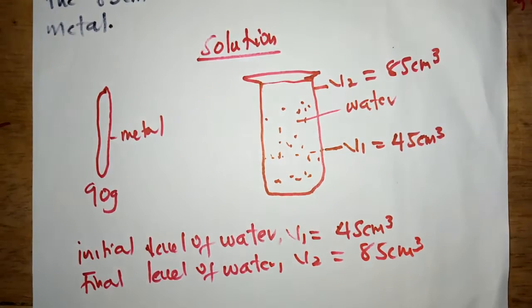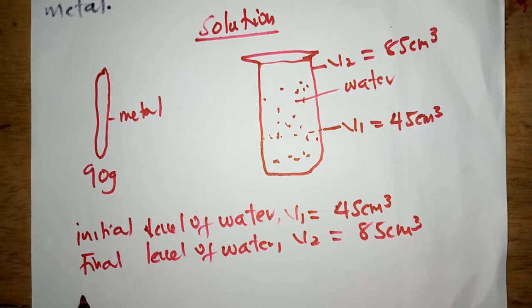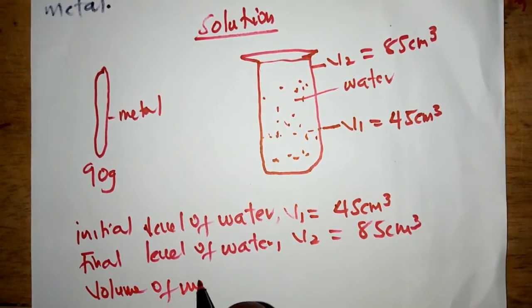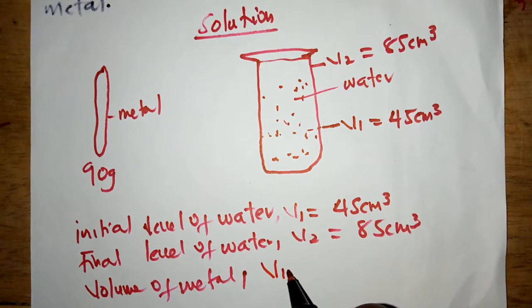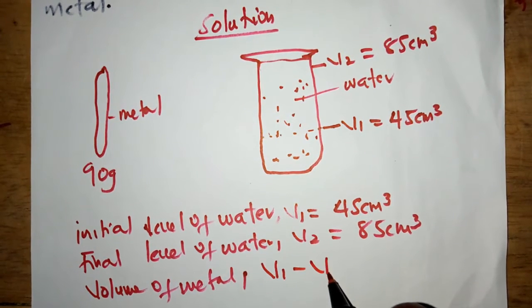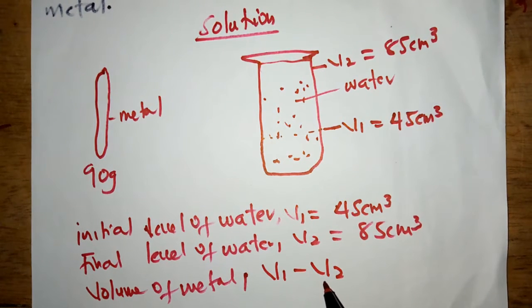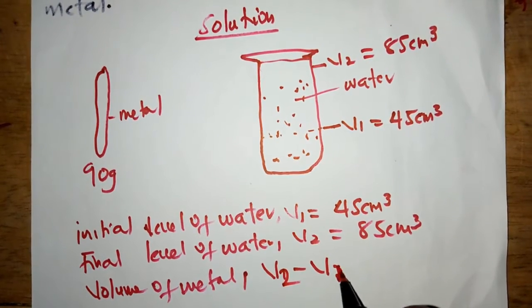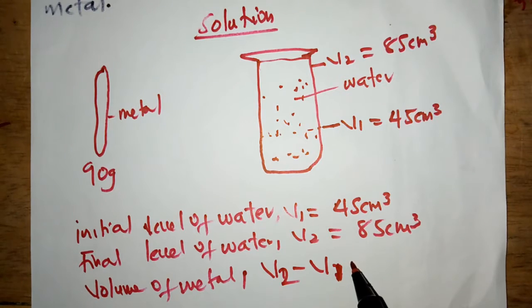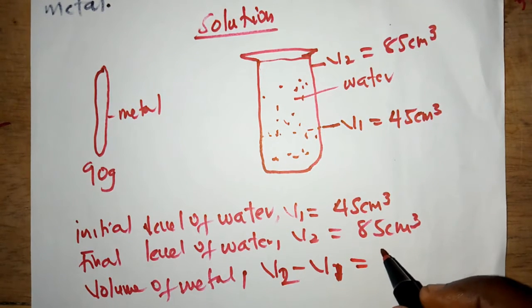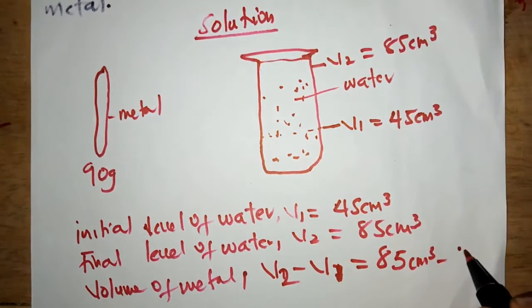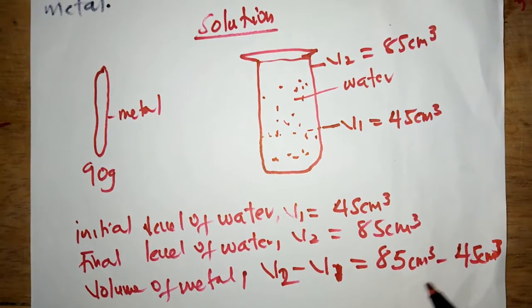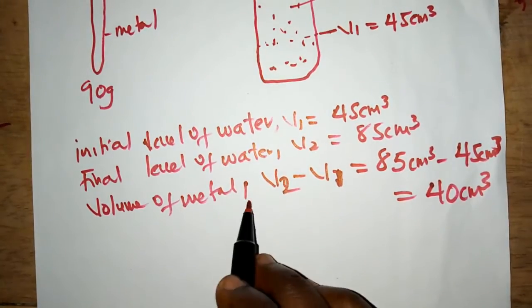The volume of the metal is basically V2 minus V1 — subtracting the initial from the final. So we have 85 centimeter cube minus 45 centimeter cube, which equals 40 centimeter cube. Now we know the volume of the metal.